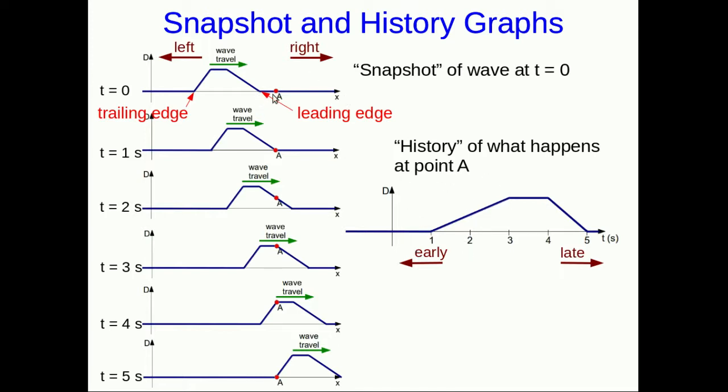The thing to realize is that the leading edge is always the same shape as the early part of the history graph. Because by definition, wherever you look on the medium, the first part of the wave to reach there will be the leading edge. So the history graph ends up having its early part, well early is always the left, having the same shape as the leading edge on the snapshot. But the leading edge could be on either side on the snapshot because the wave could be traveling in either direction.